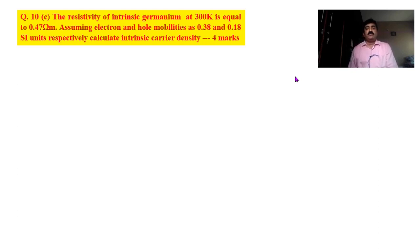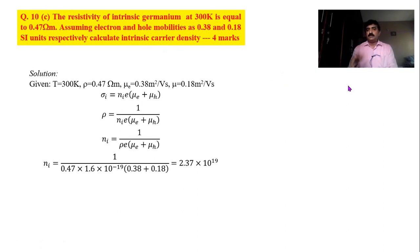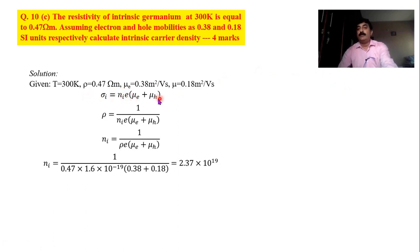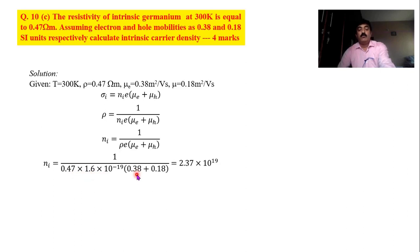We need to find the intrinsic charge carrier density n. Using sigma equals n·e·(mu-e plus mu-h), and since sigma equals 1/rho, we rearrange: n equals 1 divided by rho·e·(mu-e plus mu-h). Substituting rho = 0.47, e = 1.6×10⁻¹⁹, mu-e = 0.38, and mu-h = 0.18, after simplification the answer is 2.37×10¹⁹ charge carriers per cubic meter.